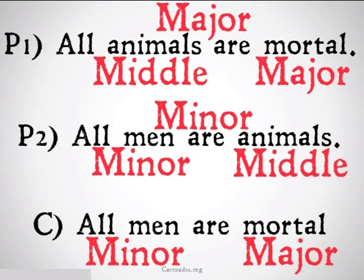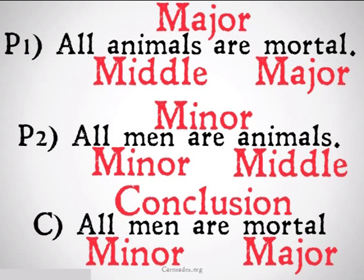You should put the minor premise second. The minor premise is going to be the premise that has the minor term, and the conclusion should always come last.